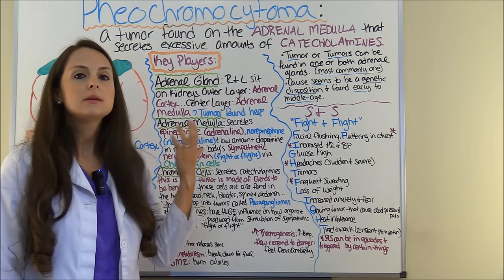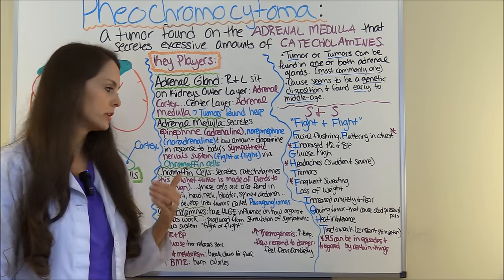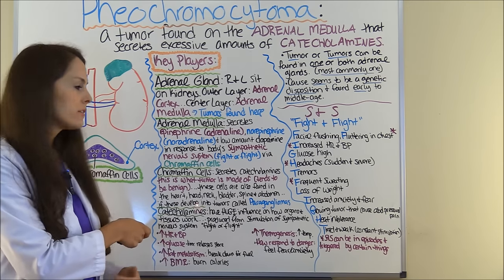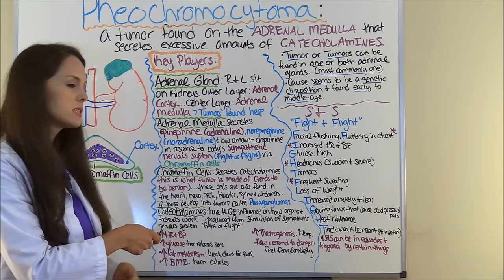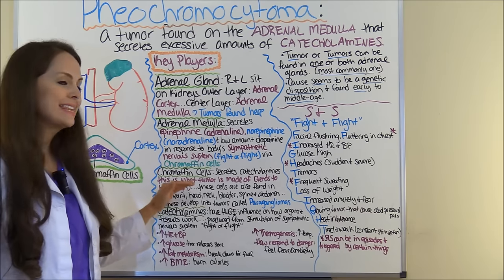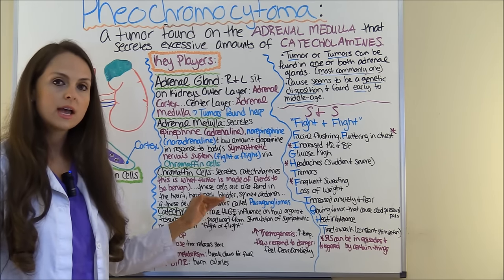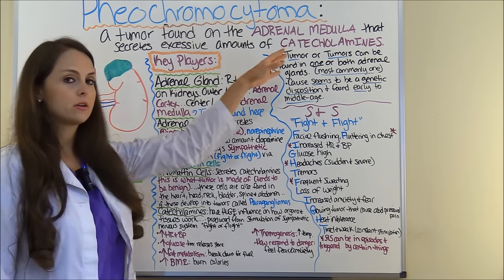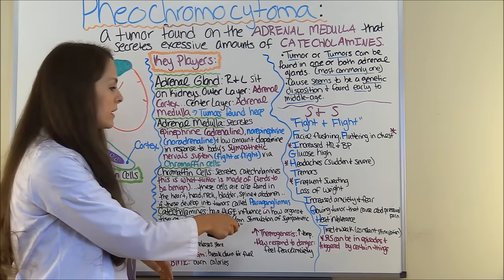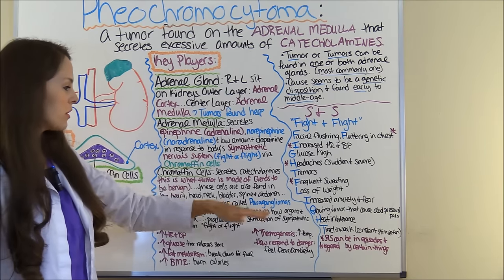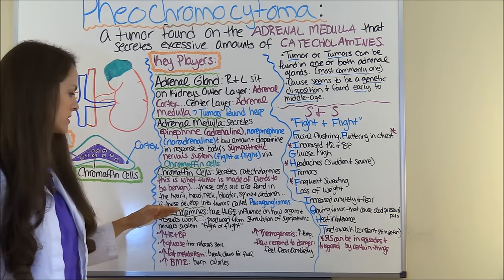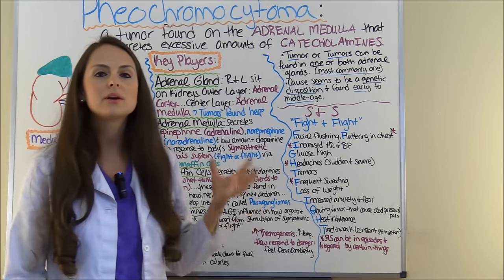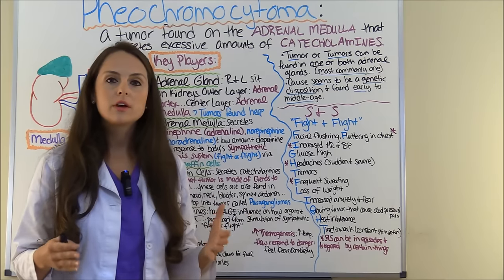These tumors tend to be benign, not malignant usually. They are also found in other places in the body such as the heart, the head, the neck, the bladder, the spine, and the abdomen. If tumors develop in those areas, that's not called a pheochromocytoma — it's called a paraganglioma. The big problem with pheochromocytoma is that you have excessive amounts of catecholamines, particularly norepinephrine and epinephrine, being secreted in the body and wreaking havoc.